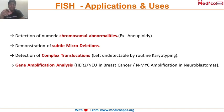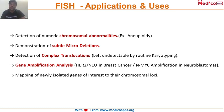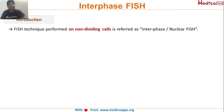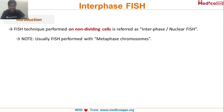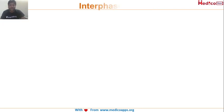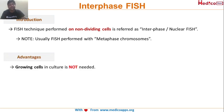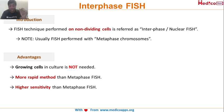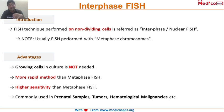In gene amplification, a gene that is amplified will show more fluorescence. Interphase FISH is a technique performed on non-dividing cells. Unlike regular FISH done on metaphase chromosomes, interphase FISH requires no growing cells and no cell culture, making it a much more rapid method. It is also higher in sensitivity than normal metaphase FISH. It is commonly used in prenatal samples, tumors, and hematological malignancies.